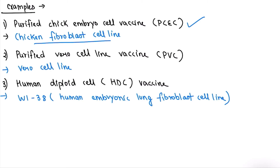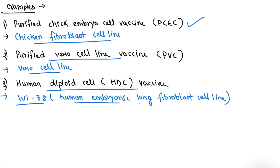The second cell culture-derived vaccine is Purified Vero Cell Line vaccine (PVCV), derived from Vero cell line. The third is Human Diploid Cell vaccine (HDCV), derived from the WI-38 human embryonic lung fibroblast cell line. We have to remember these three names: PCEC, PVCV, and HDCV.